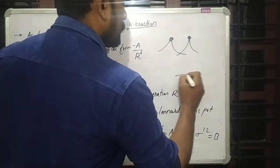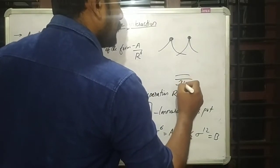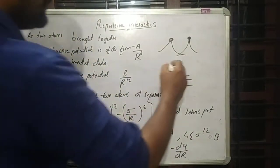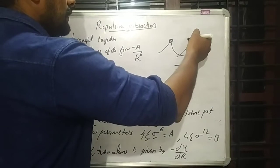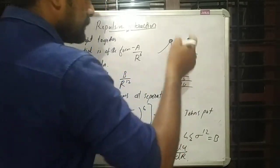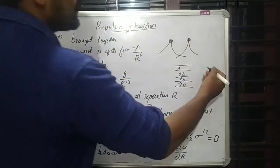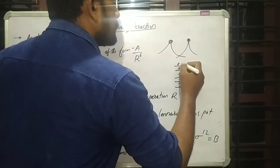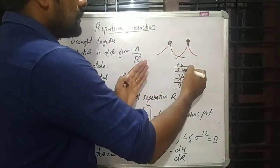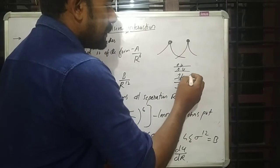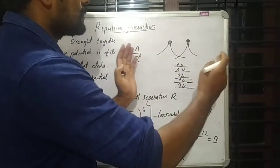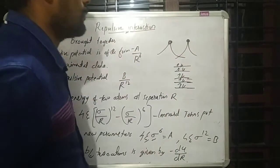If we consider the energy states of one atom, up-spin and down-spin electrons fill those orbitals. If you bring another atom close, its electrons can only occupy energy states not already filled, due to Pauli's exclusion principle. So when we bring two atoms together, electrons cannot occupy the lowest energy states already taken, and there will be a strong repulsion.